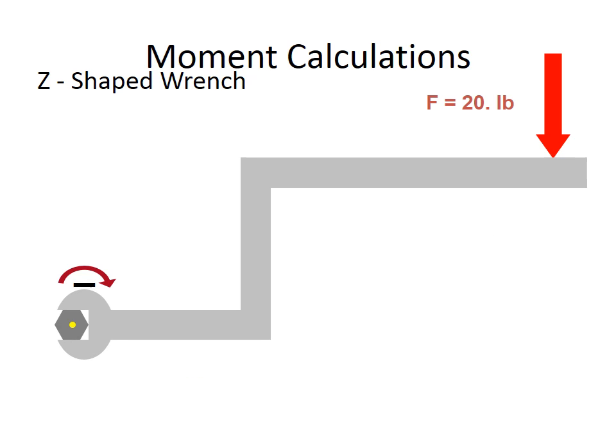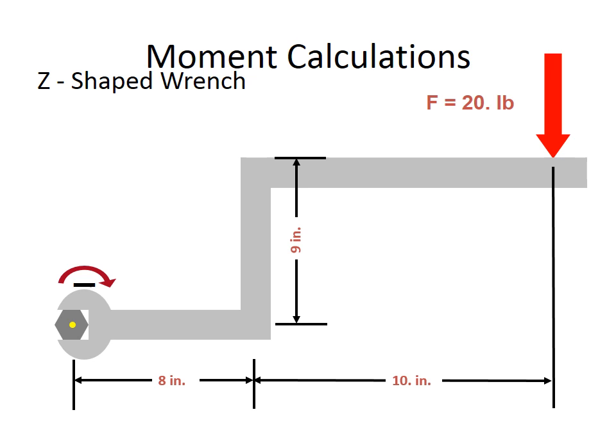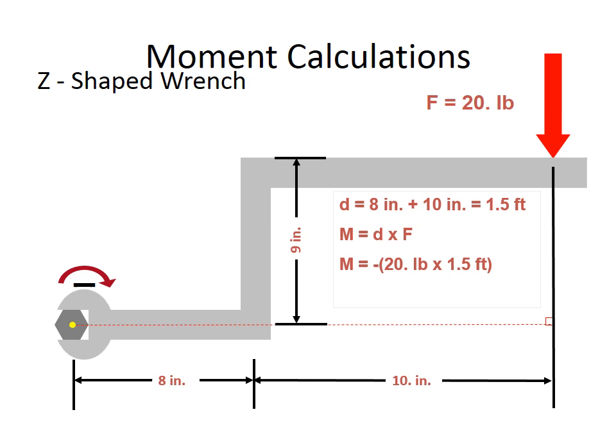So let's change our wrench one more time. We still have our 20 pounds and we're still rotating it clockwise, so our moment is going to be negative, but we've changed our wrench a little bit more. We've extended the three inches to nine and we've extended the length to 18 inches. So our perpendicular distance in this case is along that 18 inches, not the nine. Very important to know. So our distance here is eight plus 10, or foot and a half, 18 inches. We apply D cross F. So we have 20 pounds times a foot and a half. We end up with 30 foot pounds, and because it is going in the clockwise direction, it is negative.